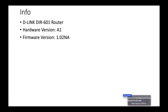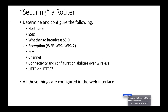Hardware version A1, firmware version 1.02NA. When we secure a router we need to figure out the hostname, whether to broadcast the SSID, what the SSID is, what kind of encryption to use, what channel to set, what key to set, whether to configure it over wireless, and whether to do that over HTTP or HTTPS. We know we want to use HTTPS.